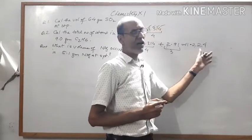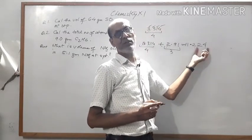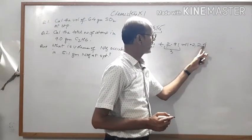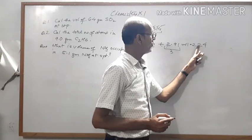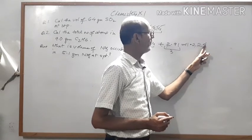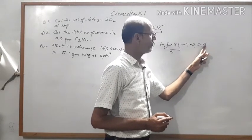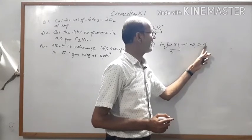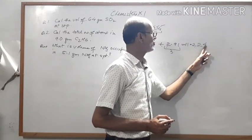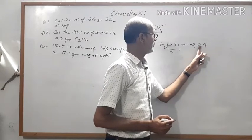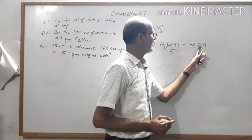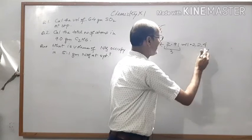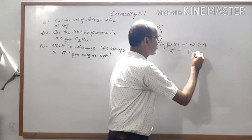To round to 3 significant figures, we look at the next digit after the third significant figure. If it is more than 5, we increase the preceding digit by one. If it is 5 or less than 5, we do not increase — we write the same number. So we write 11.2 by removing the trailing digits, since the next digit does not require rounding up.